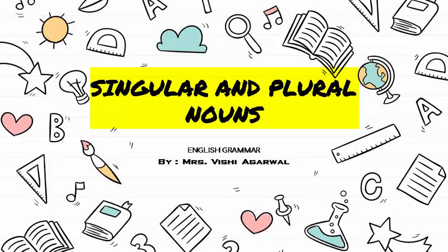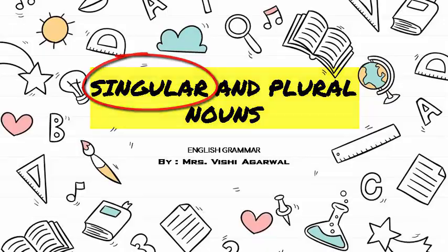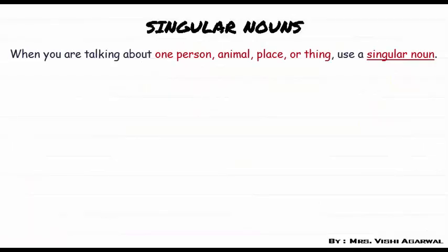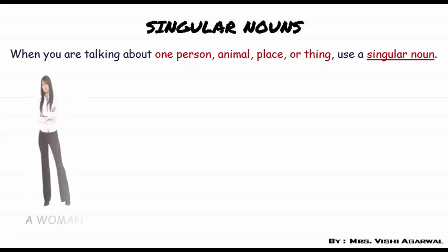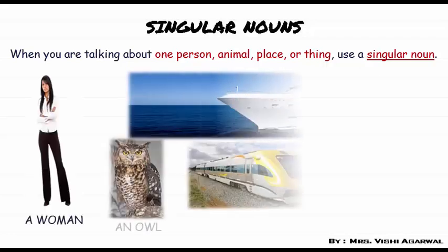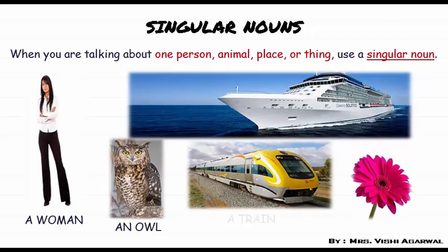So first we will discuss about singular nouns. What are singular nouns? When you are talking about one person, animal, place or thing, then it is called a singular noun. For example: a woman, an owl, a train, a flower, a ship, and many more.